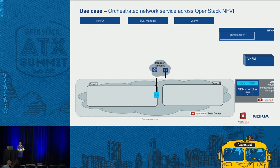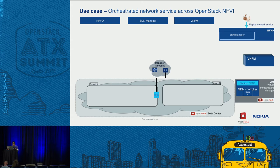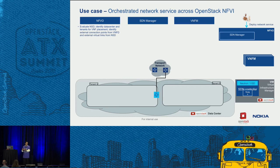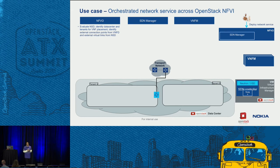I'll take you through a small animation on the use case. We have the different elements of NFV: the NFVO which is CloudBand Network Director, the SDN Manager which is Nuage, and the VNF Manager. When an operator wants to deploy a network service, the network service is evaluated, the data center is identified for deployment, and the tenants for the VNF are determined. VNF placement based on VNF characteristics is identified, and the external connection points for the NSD are evaluated to confirm they fit a particular data center.